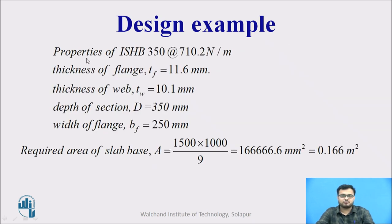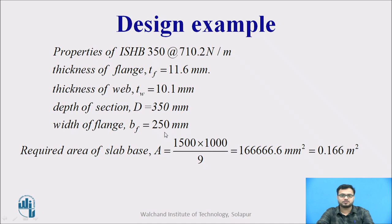From the IS handbook, we take the properties of ISHB 350: thickness of flange tf = 11.6 mm, thickness of web tw = 10.1 mm, depth of section = 350 mm, width of flange bf = 250 mm. First, we calculate the area of the slab base: A equals load in Newtons divided by bearing pressure in N/mm², giving the value in mm².